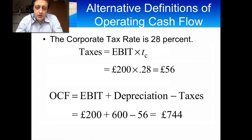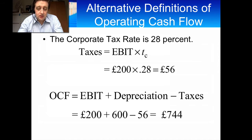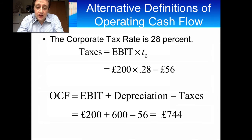How do we calculate operating cash flow? Well, to calculate operating cash flow we get the earnings before interest and taxes. Interest is zero, so it's just earnings before taxes. You add the depreciation on, which is 800, and then subtract the taxes, which is 56. So you get an operating cash flow of 744 pounds. That's one way of calculating operating cash flow.